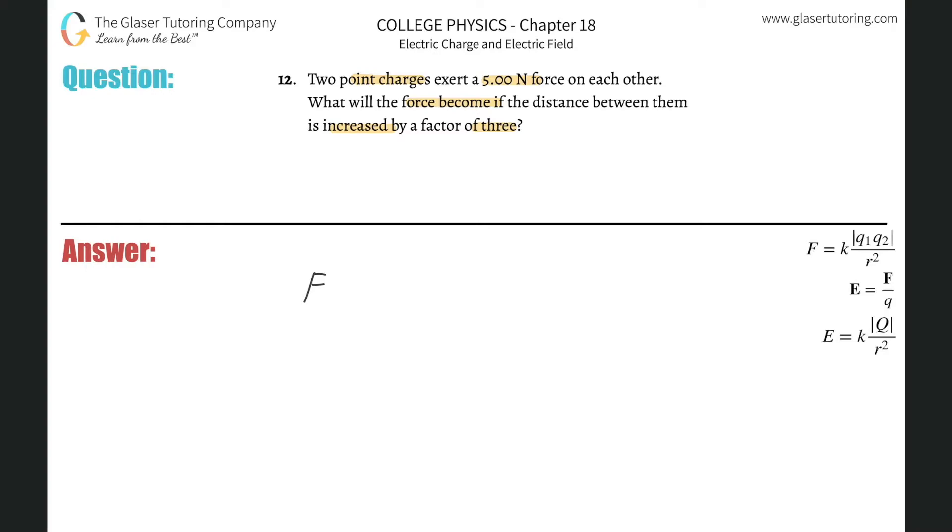Here the force of attraction or repulsion between two objects is going to equal the force constant k multiplied by the product between the two charges, the absolute value that is of the product between the two charges, q1 times q2, all divided by the distance between them r squared.